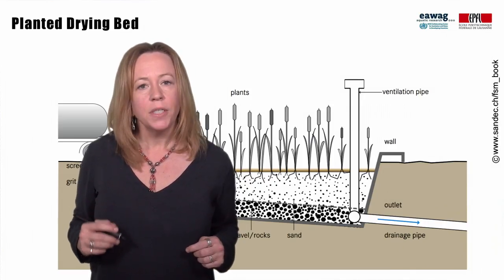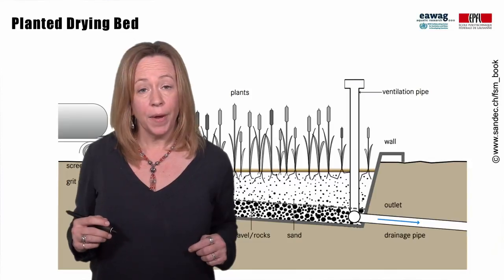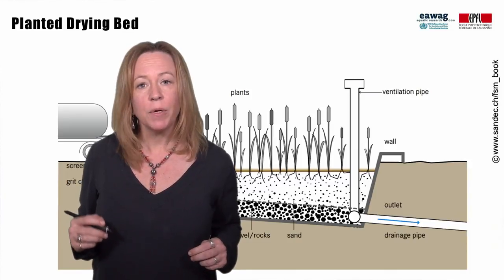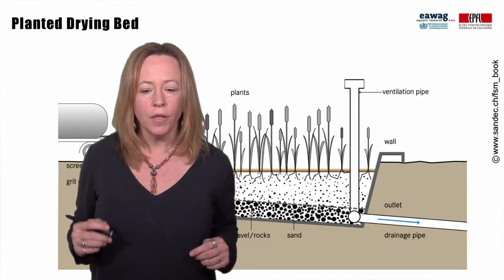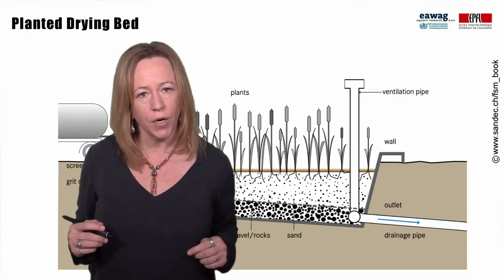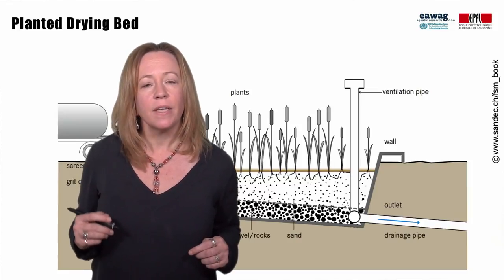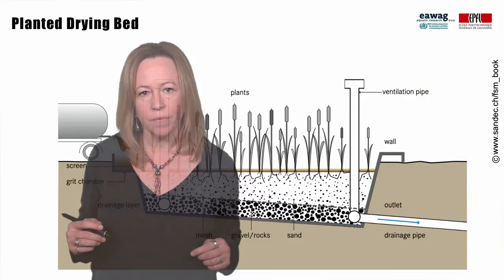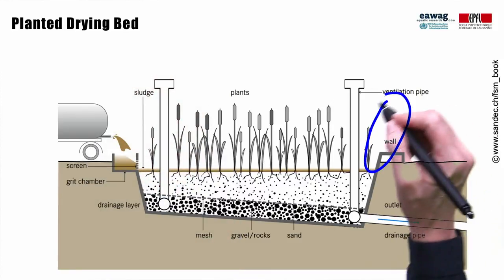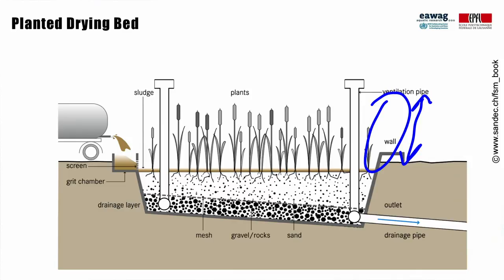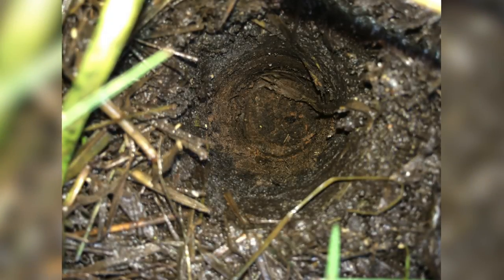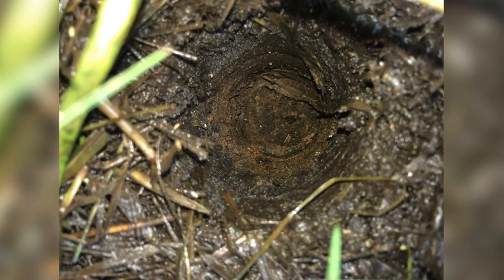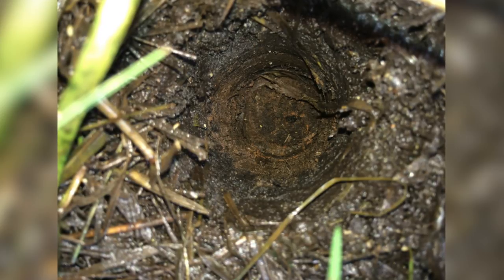Desludging frequencies are going to depend on factors such as loading rate and climate. Experimental data from Cameroon suggested a loading rate of 200 kilograms total solids per square meter per year had 50 to 70 centimeters per year of sludge accumulation. That means, if you had a freeboard of 2 meters, this could result in 3 to 4 years for desludging. However, other studies have had lower accumulation rates, and desludging intervals can even be up to 10 years long.